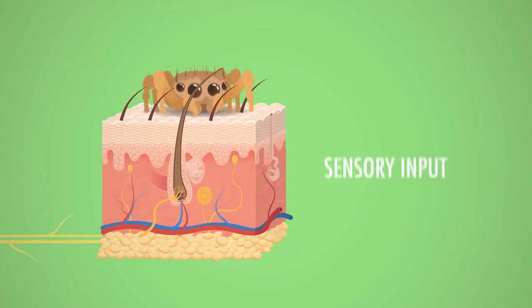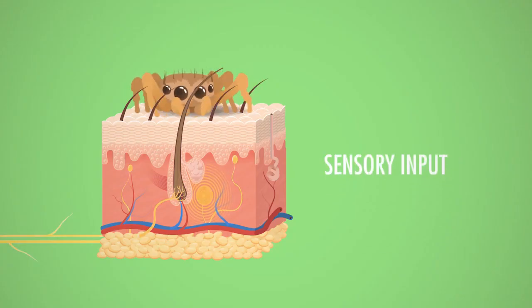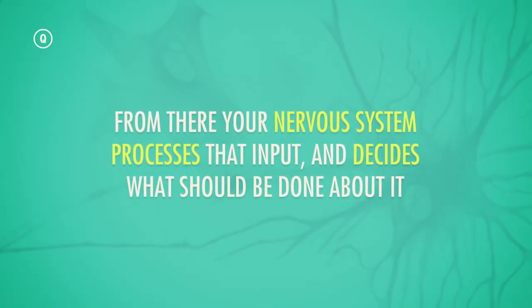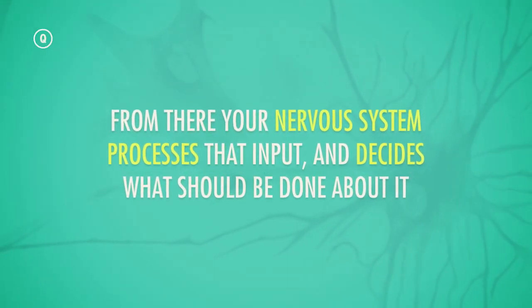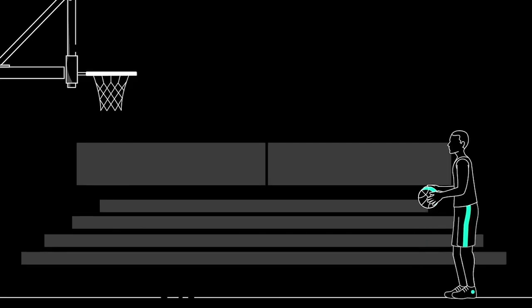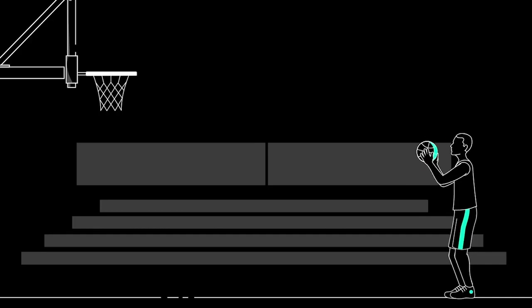That information is your sensory input. From there, your nervous system processes that input and decides what should be done about it. That's called integration. Think about shooting a free throw. Know that feeling when you got it down and don't even have to think about it? That's muscle memory.